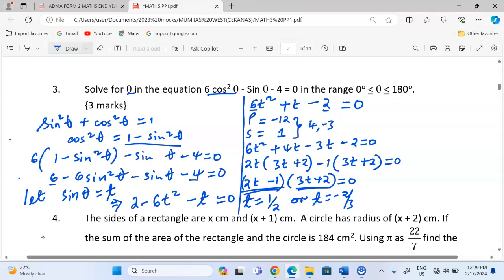So with this now, we can get the values of θ because what had been let to be sinθ is t. And therefore, if sinθ is let to be t and now we have the value of t, we can now substitute and say sinθ = 1/2.